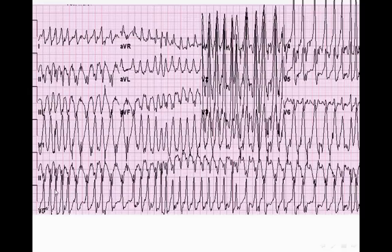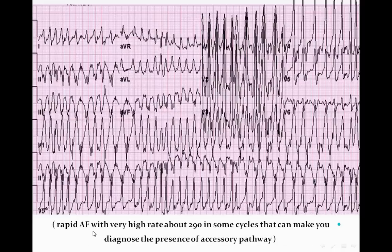If we calculate the heart rate between these two successive R waves, it will be 300 divided by 1, so the heart rate here is about 300. This is not logical for the AV node to pass this very high heart rate, because there is a physiological delay we explained before. The AV node cannot pass this very high heart rate and couldn't let this complex come very near to the previous complex. So this is rapid atrial fibrillation with a very high heart rate — about 290 in some cycles — making you suspect the presence of an accessory pathway.